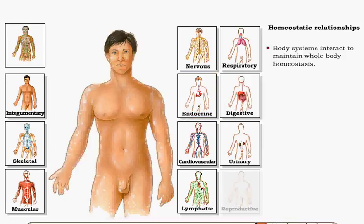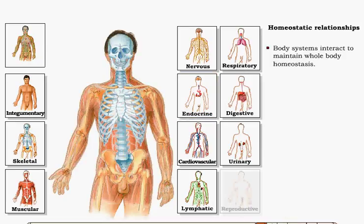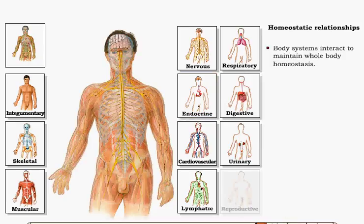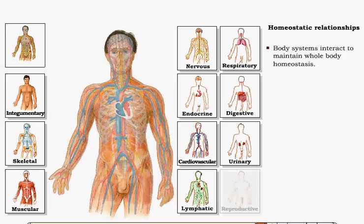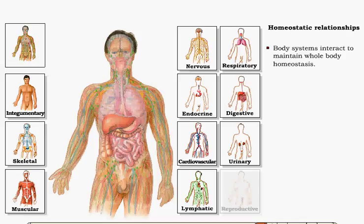All body systems interact with the other systems in the body to maintain overall homeostasis. If any one system fails to provide its normal functions, homeostasis can be disrupted and a disease state can occur.